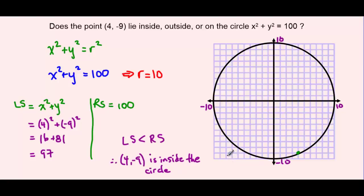To summarize: the equation of a circle x² + y² = r² defines circles based on their radius. If you're given an equation of a circle, find the radius by taking the square root of the right side. To prove whether a point lies inside, outside, or on the circle, do a formal left side / right side check to see if the result is less than, equal to, or greater than the right side value.